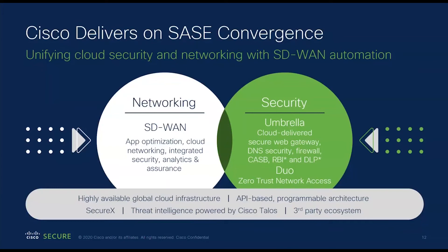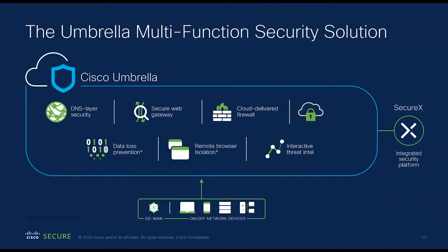Our architecture — our edge — is really built from the ground up as a native cloud architecture; we're not lifting and shifting. A lot of traditional on-prem vendors may just take their hardware, stick it in a data center, and have you route through that — and that doesn't really scale over time. We've built our Umbrella solution to scale because it's cloud native — not built on top of some existing legacy hardware.